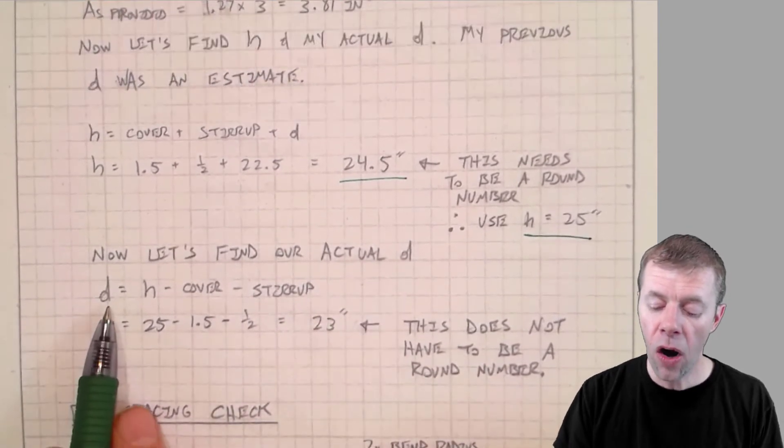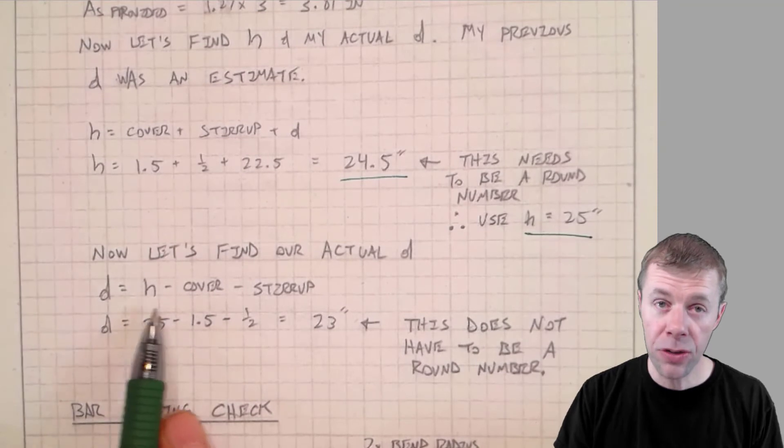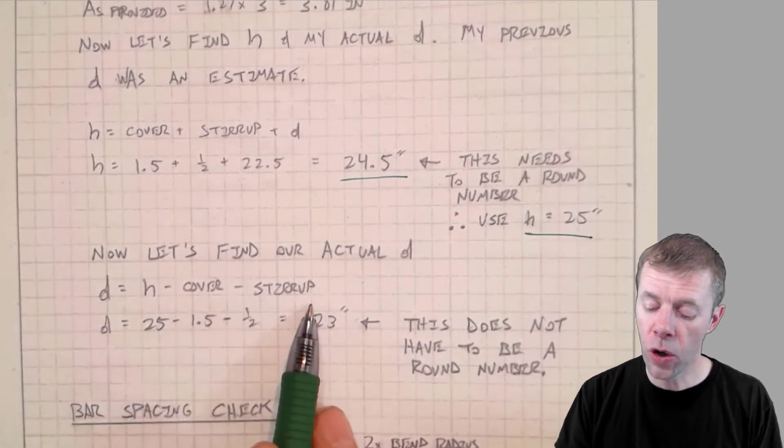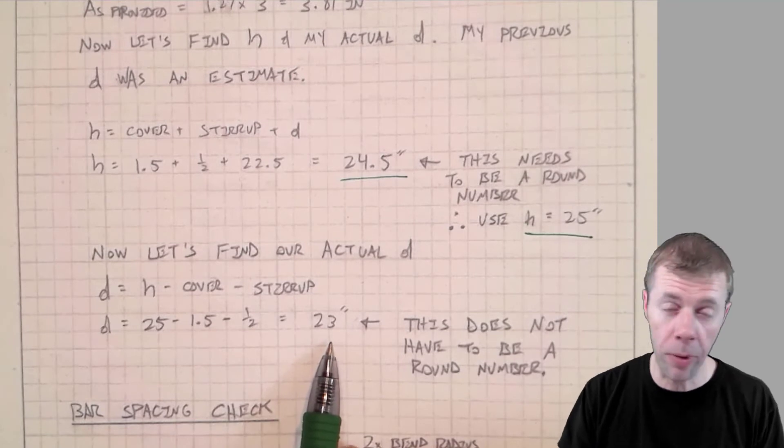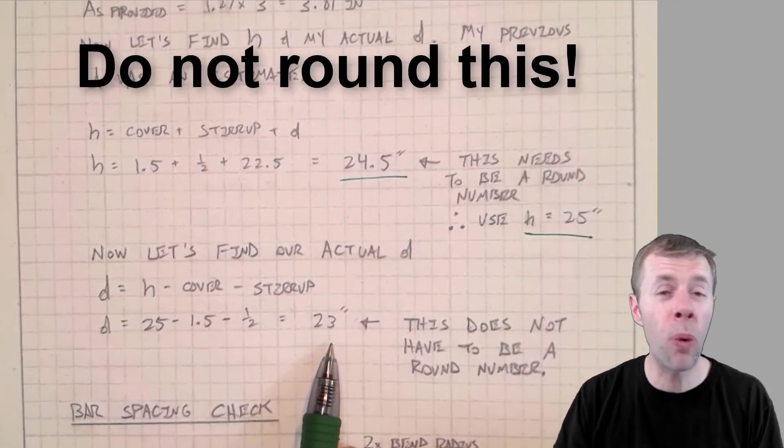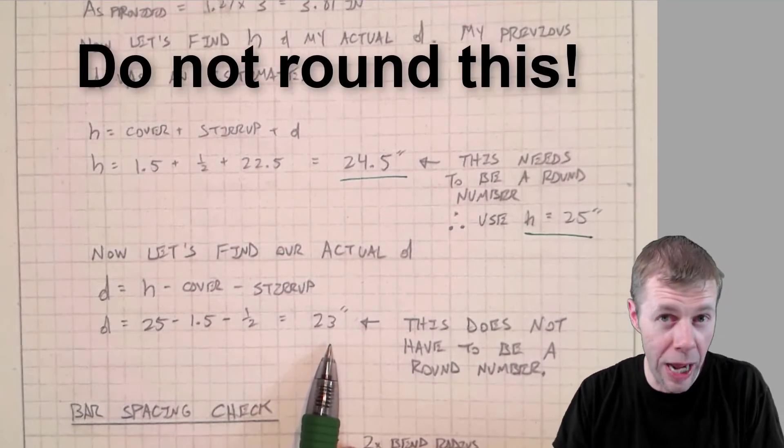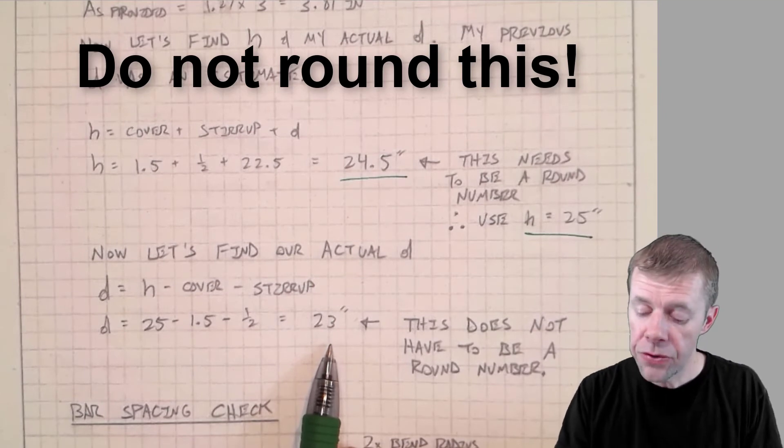Now, ladies and gentlemen, we don't have to guess anymore. We can find our actual D. We do our same calculation before. Our height minus our cover minus our stirrup is 23 inches. And we do not have to round this number. This is now our D.